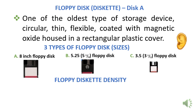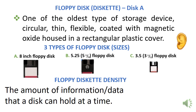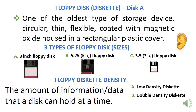Now, we want to look at what we call floppy diskette density. What is floppy diskette density? It is the amount of information or data that a disk can hold at a particular point in time, and it is always measured in bytes. There are three basic types of floppy diskette density. Number one is what we call low-density diskette. Number two is known as double-density diskette. And the third one is known as high-density diskette. The one that can contain the least amount is low-density, the one that can contain an average amount is double-density, and the one that can contain the highest amount is high-density diskette.